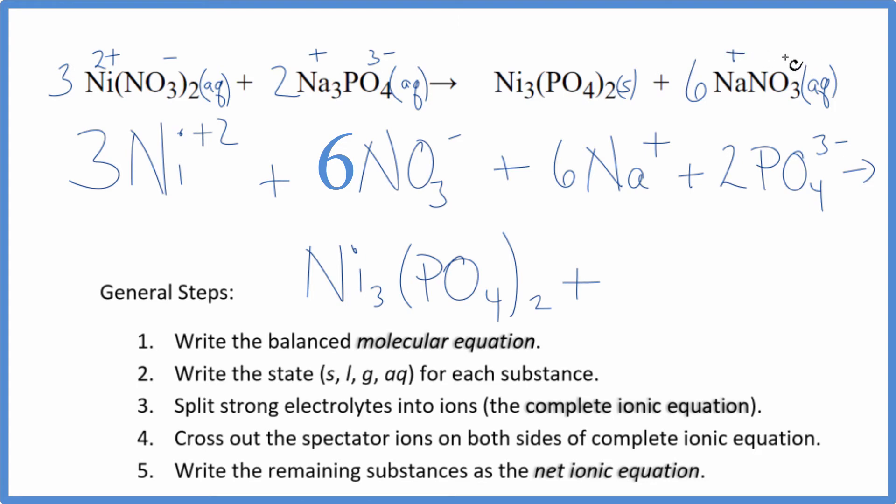For the products, we don't split solids up. So we just write nickel(II) phosphate. Then sodium, that's positive. The nitrate, that's a negative. So we have six sodium ions, just like in the reactants here. Plus we have six nitrate ions, NO3 minus. So this is the complete or total ionic equation.